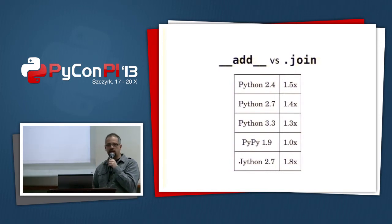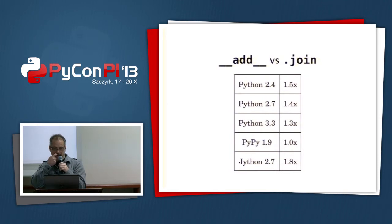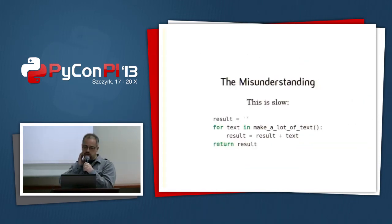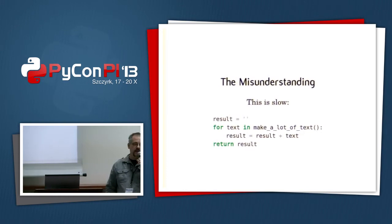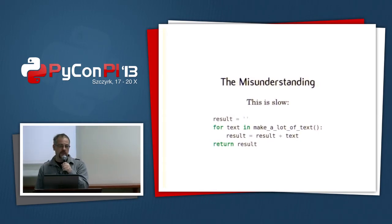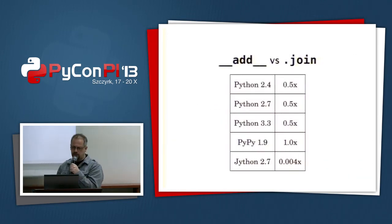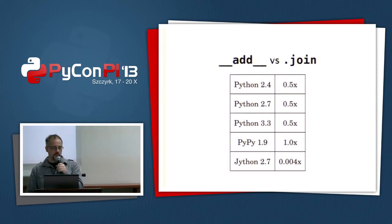Looking at benchmarks, using plus (add) is actually faster than join in every case except PyPy when concatenating two strings. So this seems like a big misunderstanding. The misunderstanding comes from this: if you have a long list of strings and you want to join them together by looping over them and adding onto a result string, it's going to be very slow. Using join is much faster comparatively.